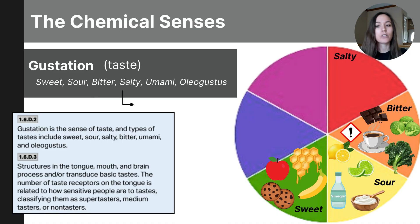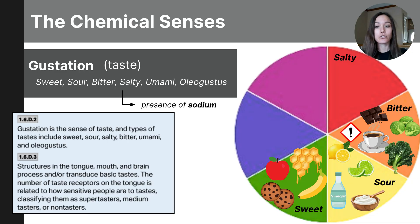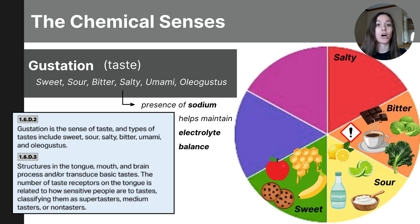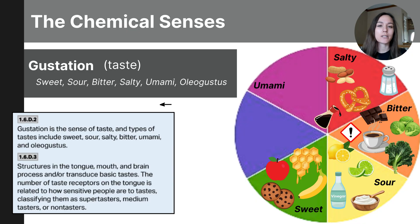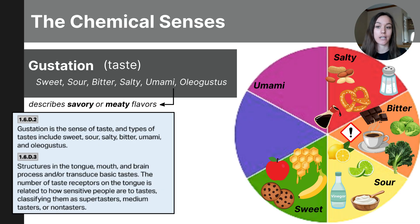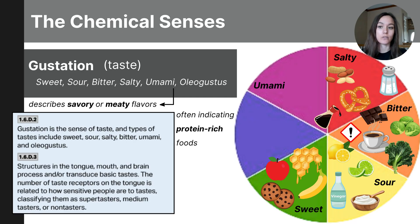Then there's salty — saltiness is primarily detected through the presence of sodium ions and is essential for the body's maintenance of electrolyte balance. Examples include table salt, soy sauce, and salty foods like nuts and pretzels. Next is umami, often described as savory or having a meat-like taste. Umami is detected through the presence of glutamates and nucleotides, indicating protein-rich foods. Examples of umami foods are parmesan cheese, soy sauce, tomatoes, and mushrooms.